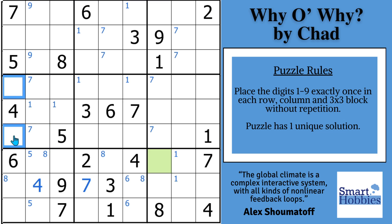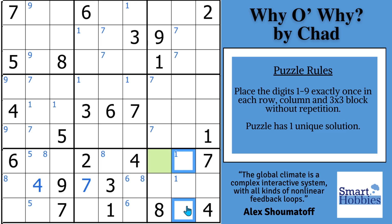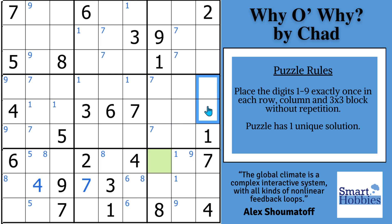The pointing pair means they can't be any of these three spots, so there are only two possibilities for nine left in block four — we'll mark that. Then with this nine and this nine we have another pointing pair of nines in block nine, so they can't be any of these three spots. We can do Snyder nines right here.